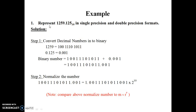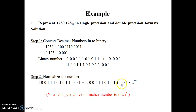Now take one example: represent 1259.125 — a given decimal number — converted into single precision and double precision format. There are four steps. Step one: convert decimal numbers into binary. So 1259 is converted into binary, then 0.125 is converted into binary, and finally 1259.125 is converted into binary. After binary conversion, the normalized form is 1.00111011001 and the point is shifted to the left. So here the exponent is 10, the mantissa is the remaining bits, and the sign bit is set.